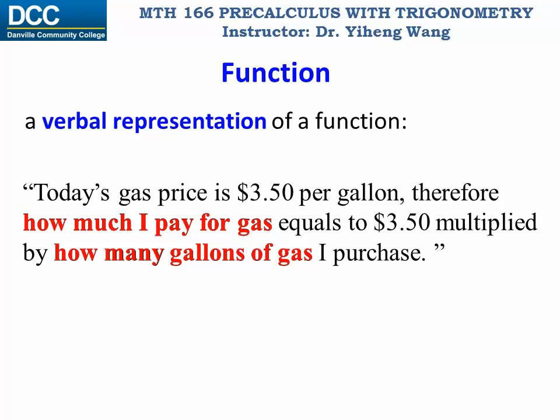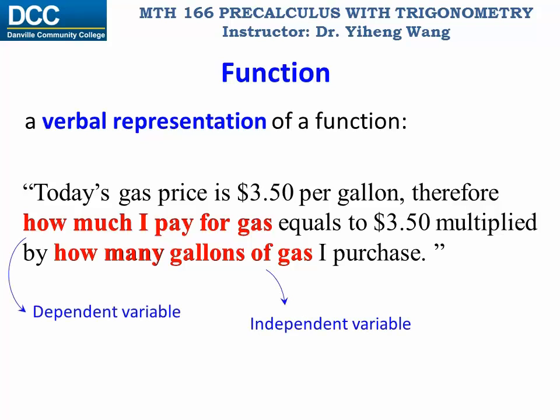In this case, gallons of gas is the independent variable, and gas money is the dependent variable.